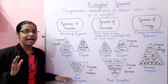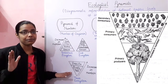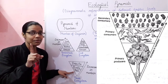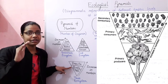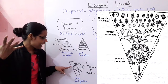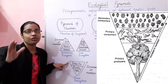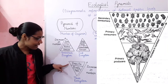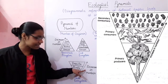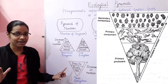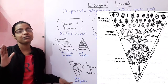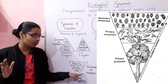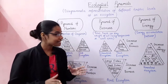The third example is the tree ecosystem, which gives an inverted pyramid. At the base there is a single tree as producer. Lots of birds are on the tree, which are more in number, and finally the insects present on the bodies of the birds are highest in number at the top. So in the tree ecosystem, the number of individuals increases with each trophic level, giving an inverted pyramid.